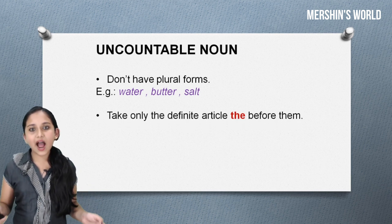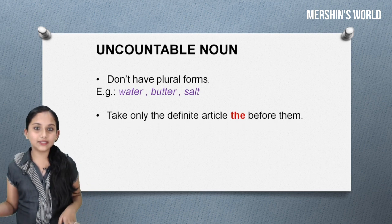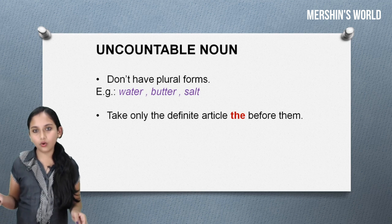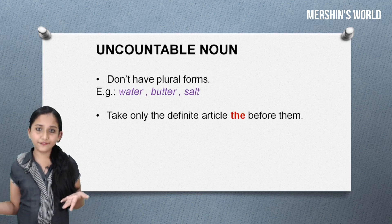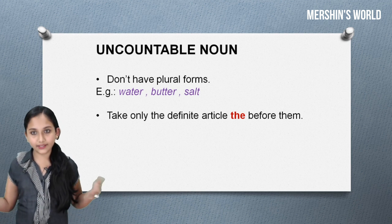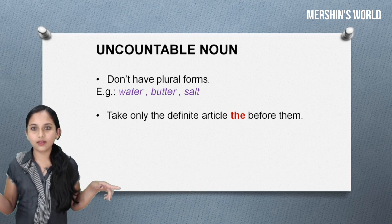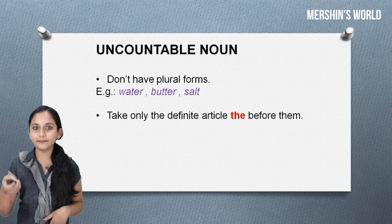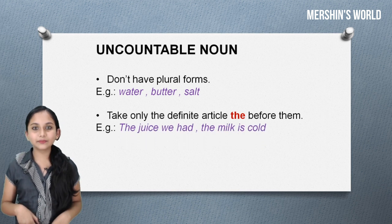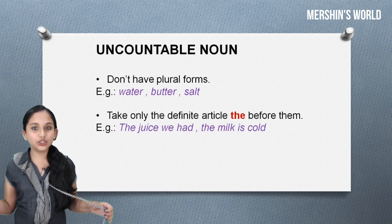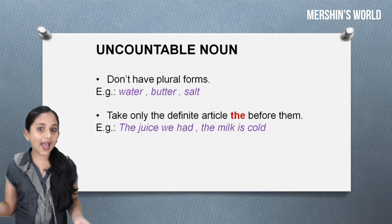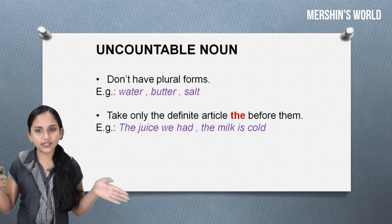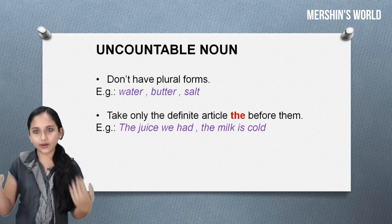Next, uncountable nouns take only the article 'the' before them. Examples are: the juice we had, the milk is cold.